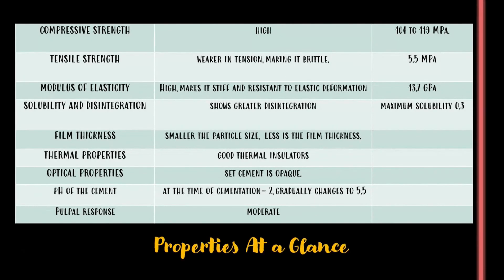The properties of zinc phosphate cement: the compressive strength is 104 to 119 MPa, which is high. The tensile strength is 5.5 MPa, making it weak and brittle. The modulus of elasticity is 13.7 GPa, which is high and makes it stiff and resistant to elastic deformation.